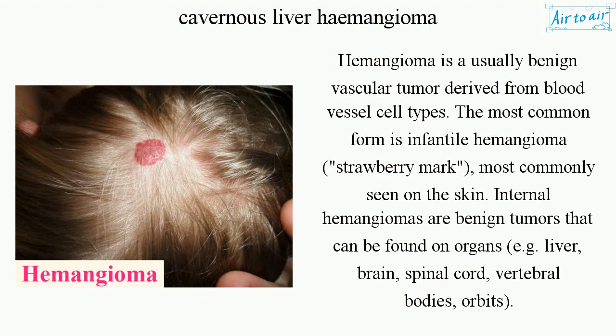Hemangioma is a benign vascular tumor derived from blood vessel cell types. The most common form is infantile hemangioma, or strawberry mark, most commonly seen on the skin. Internal hemangiomas are benign tumors that can be found on organs such as the liver, brain, spinal cord, vertebral bodies, and orbits.